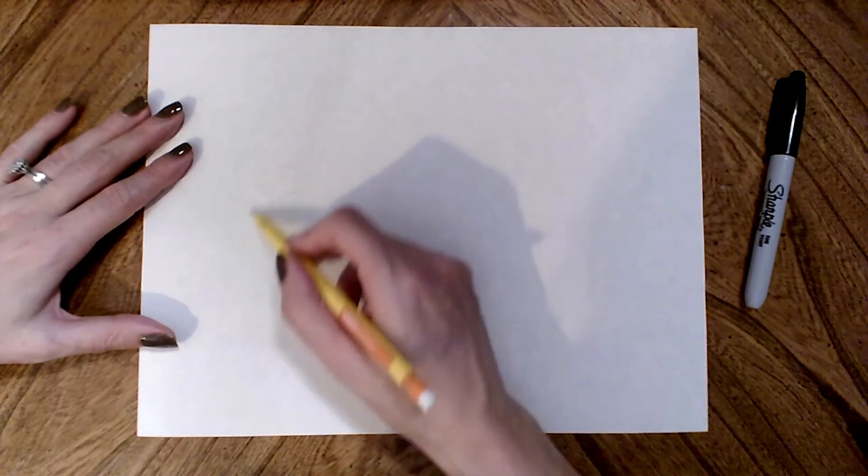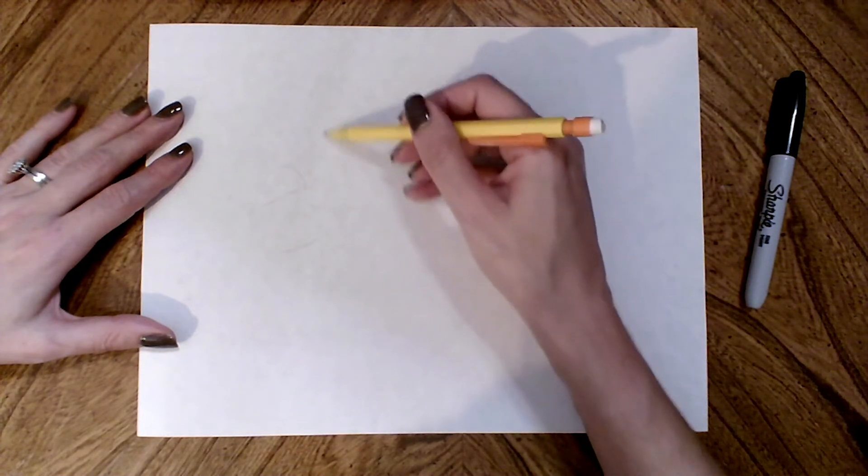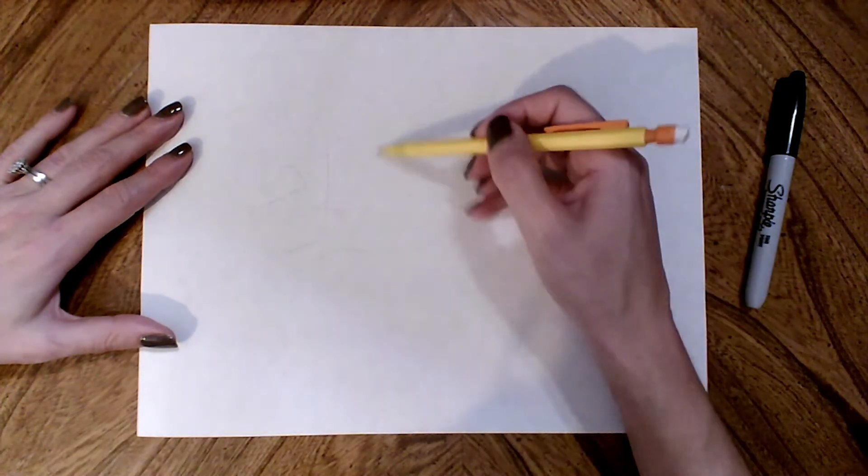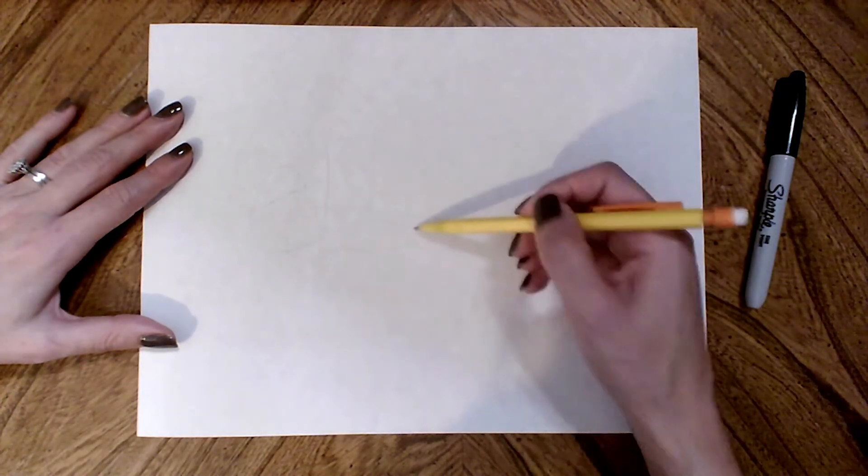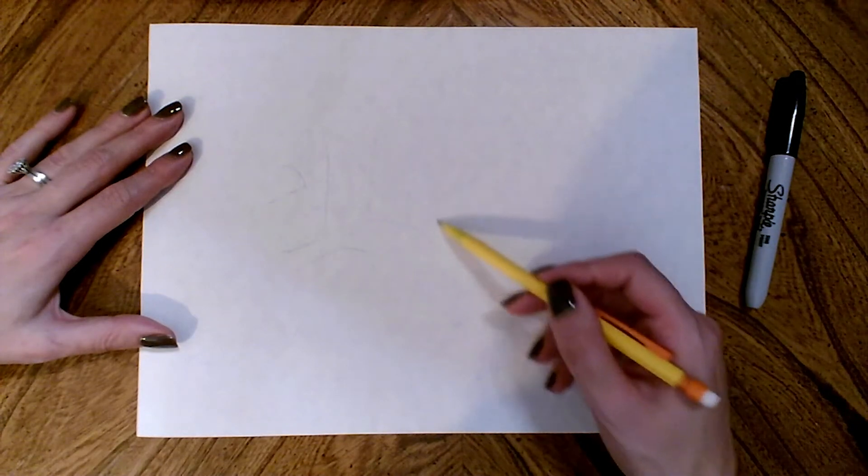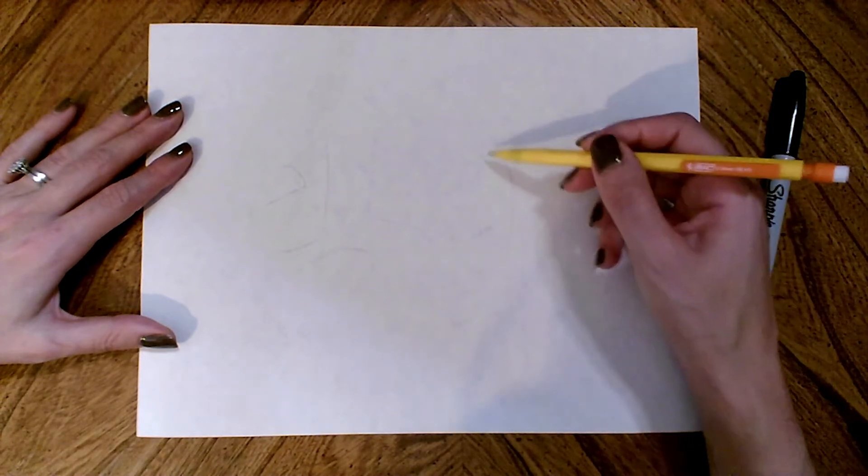I'm going to start off by very lightly writing my name in a similar kind of style to the picture that I'm looking at. This just kind of helps me map it out on the paper so that I know I fill it up nicely. I don't want to make it super tiny. I don't want to make it so big that it goes off one edge.